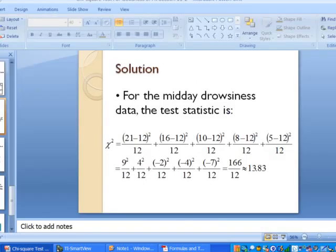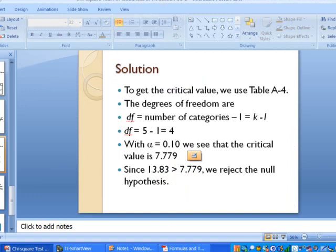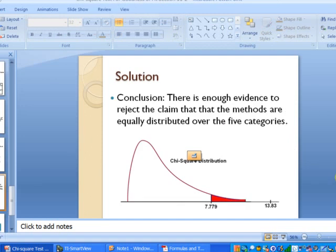So let's go ahead and summarize our results here. So notice here, in the last bullet item, the test statistic is greater than the critical value. So we reject the null hypothesis. Let's take a look at our conclusion now. It looks like there is enough evidence to reject the claim that the methods are equally distributed over five categories. So you can see there we have our chi-square distribution, our critical value, and then our test statistic. So that's how we can compute our test statistic for the chi-square goodness-of-fit test.